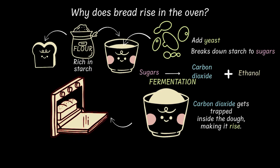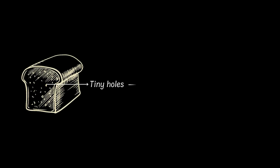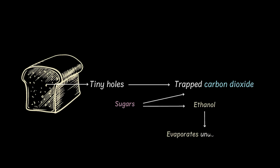Eventually, the temperature inside the oven climbs so high that the yeast can't survive anymore. But by then, mission is accomplished and we have the gorgeous, airy bread that we love to eat. When we slice open a baked bread, we see these tiny holes inside — those are the spaces where carbon dioxide was trapped, giving bread its soft and spongy texture. All of the alcohol formed evaporates in the heat of the oven, and that's why bread is never, ever alcoholic.